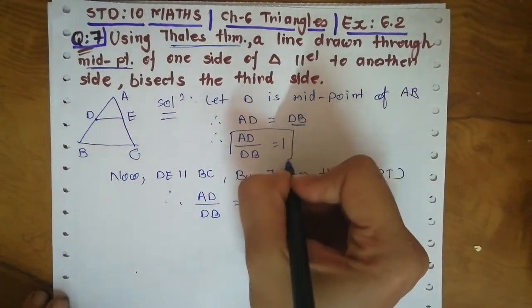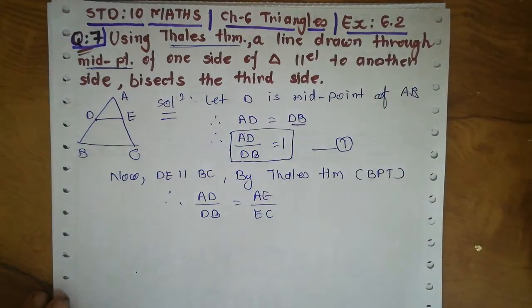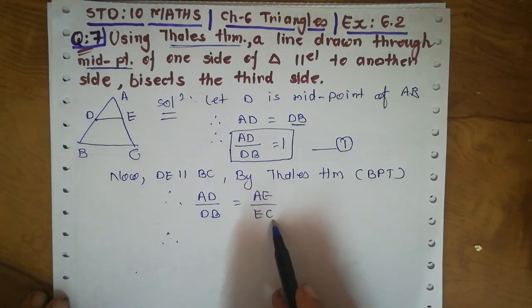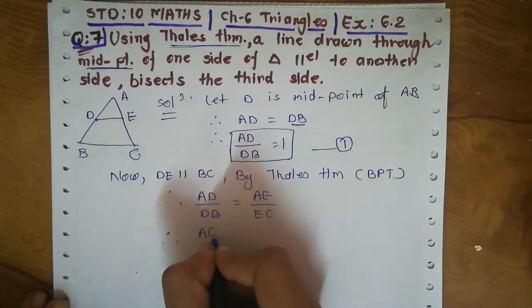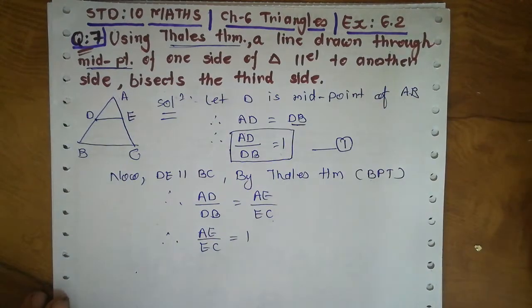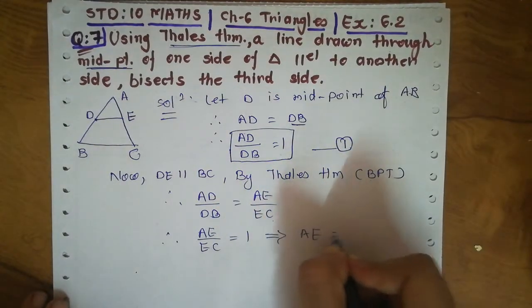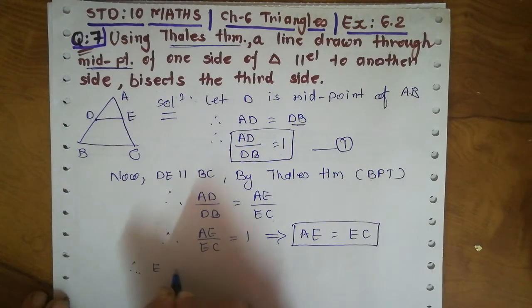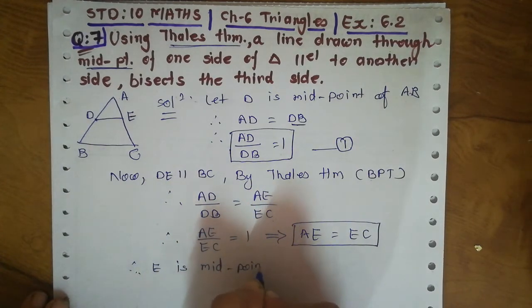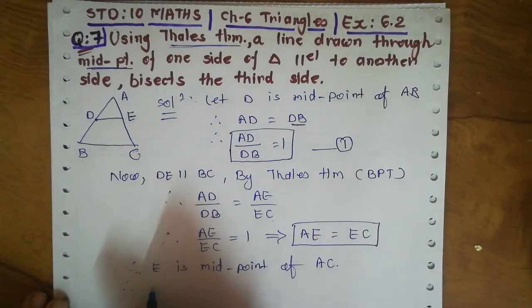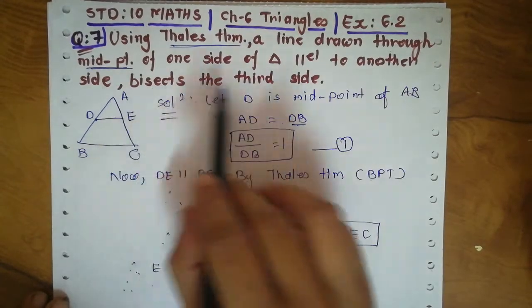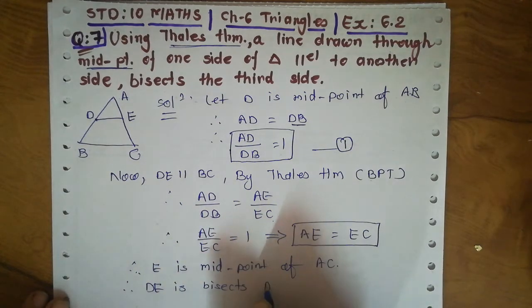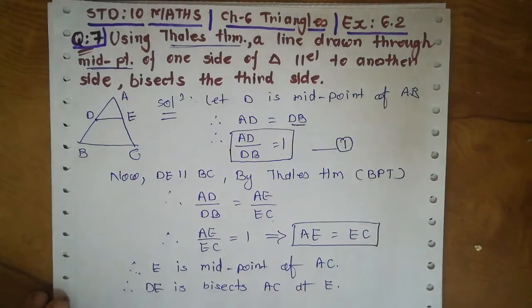Take this as equation 1. From equation 1, we have AD upon DB equals 1. Therefore AE upon EC also equals 1. Therefore AE upon EC equals 1, which means AE equals EC. Therefore E is the midpoint of line AC. That means DE bisects AC at point E. Hence proved.